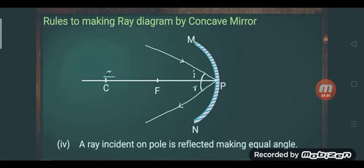After that, the fourth rule: a ray incident on the pole is reflected making equal angles with the principal axis.